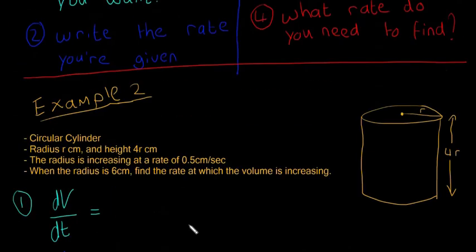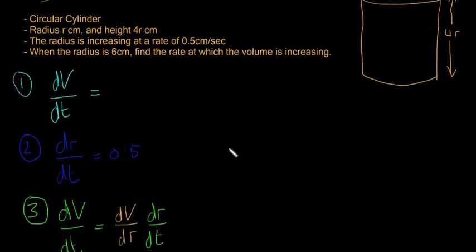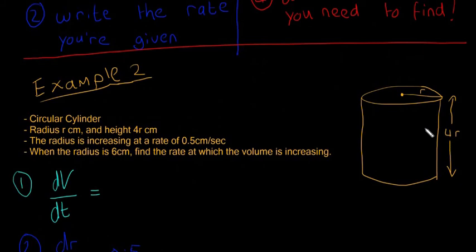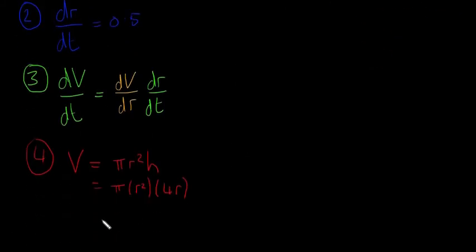And now step four is what rate do you need to find? We need to find dV/dr. If we go back to our last example, we need to find the area of the circle, and this one we're just going to have to find the volume of the cylinder. Volume of a cylinder is equal to πr²h, which in this case is equal to π by r² by 4r, because h is going to be four times the radius. So that means it's equal to 4πr³. So that's what V is.